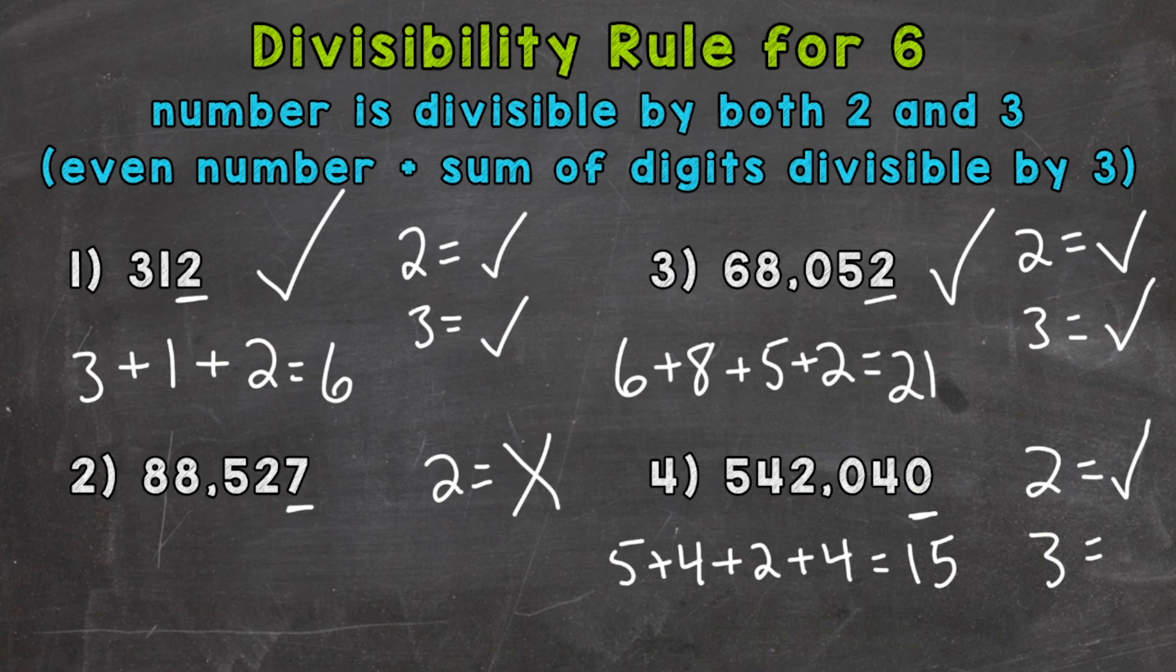15 divided by 3 is 5. It works out without a remainder. So 15 is divisible by 3, the sum of the digits. Therefore, the original number, 542,040, is divisible by 3 as well. So that's divisible by both 2 and 3, therefore divisible by 6.